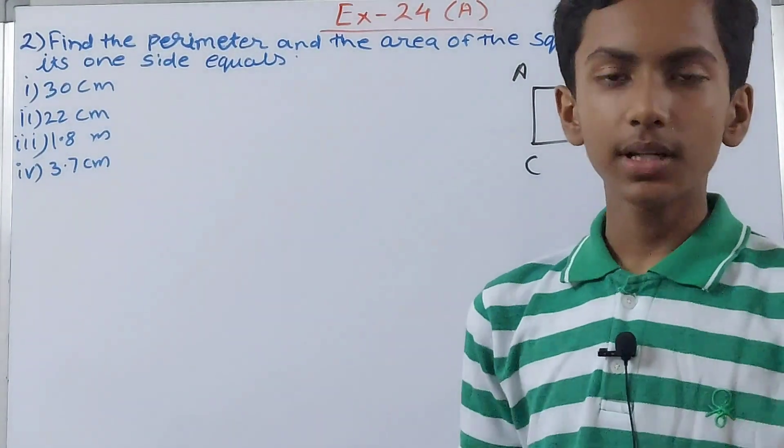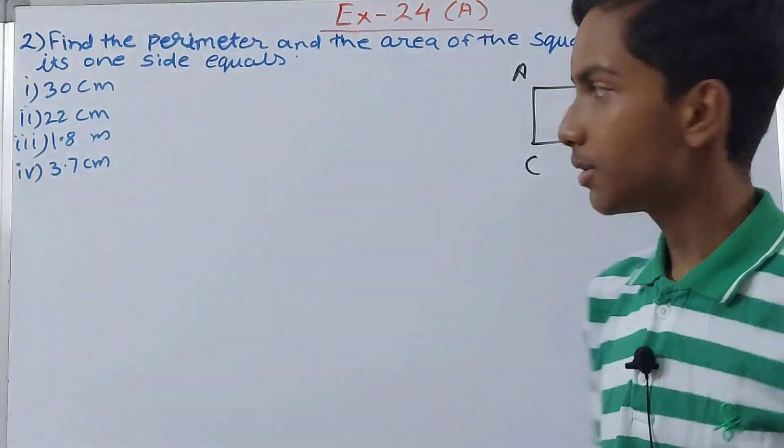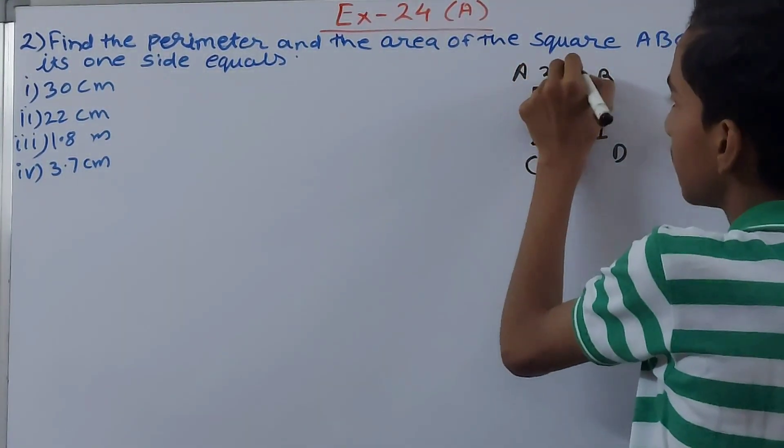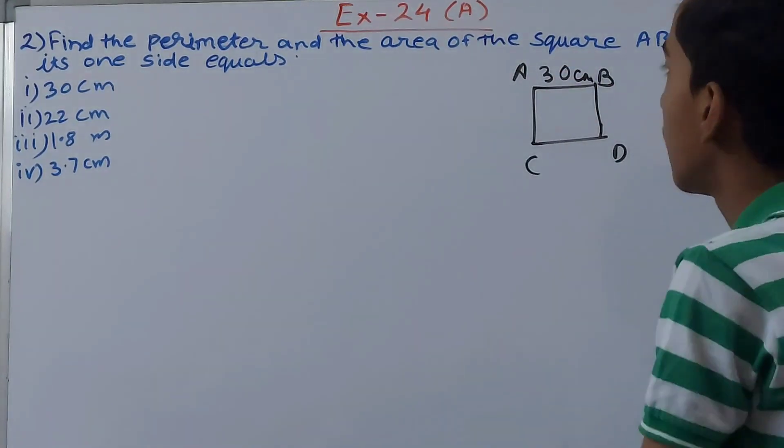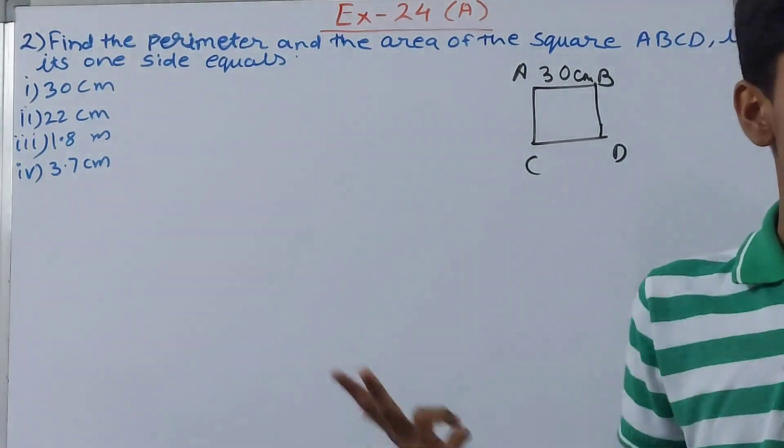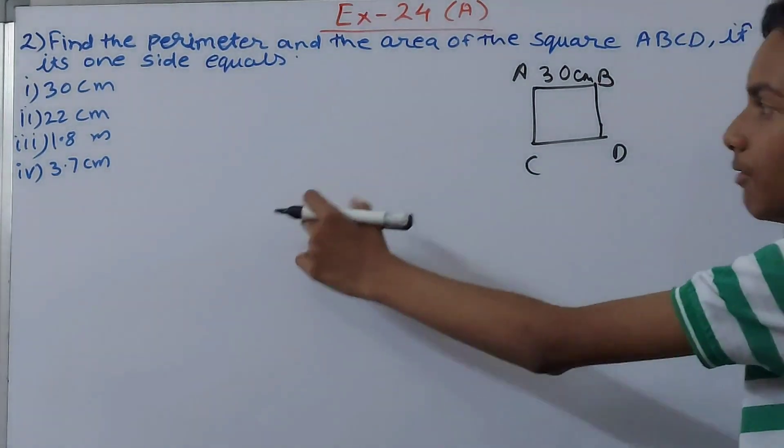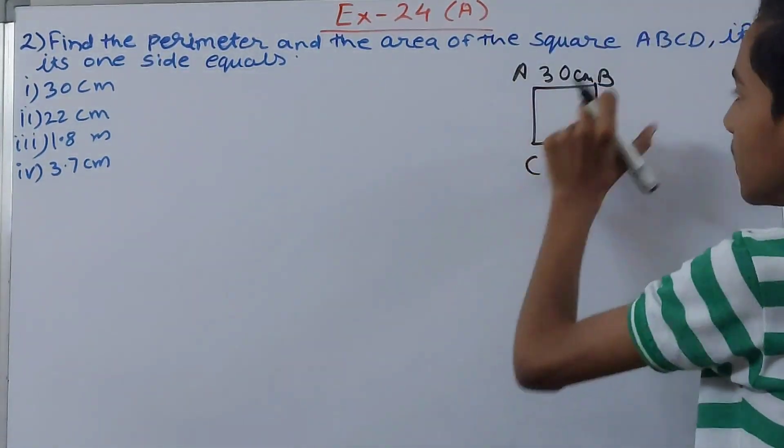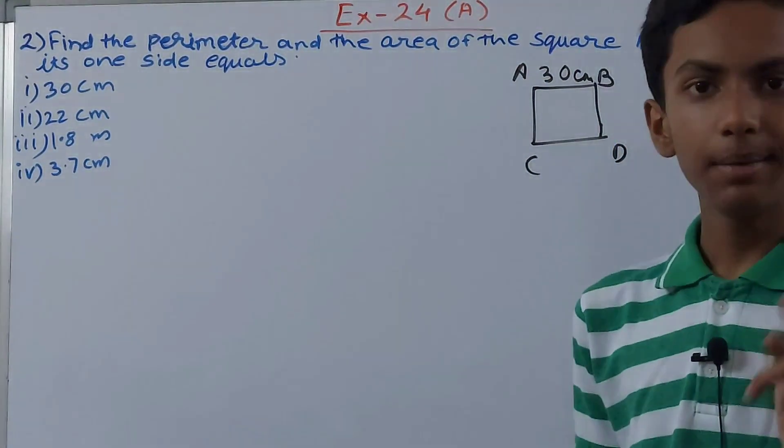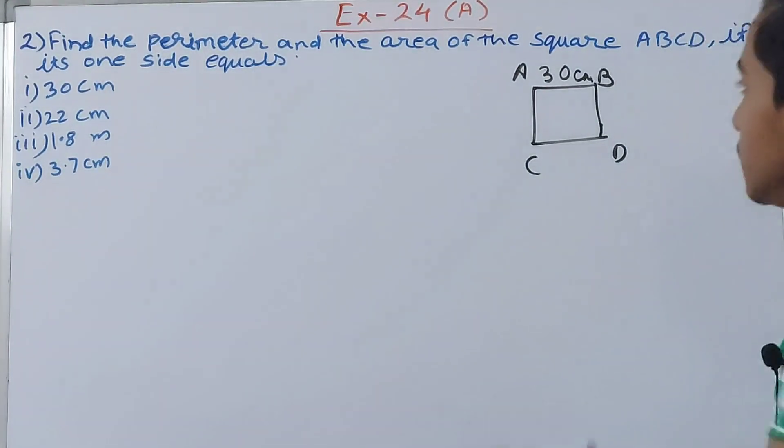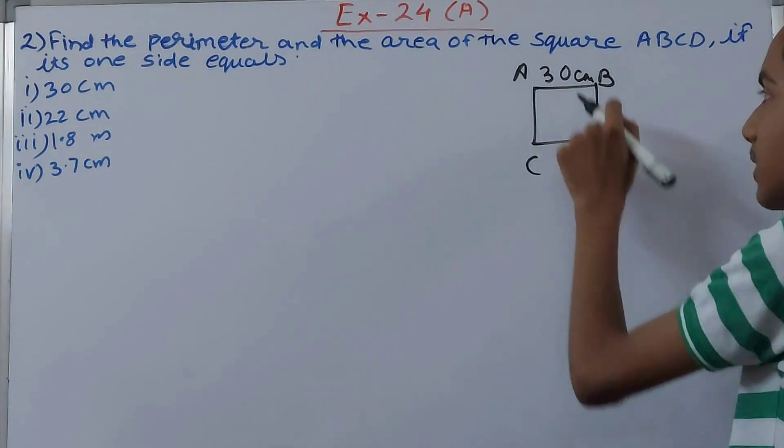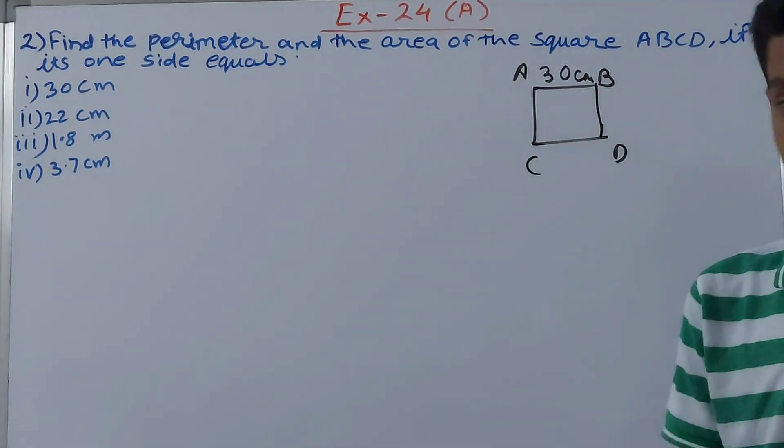The first one is 30 centimeter, so AB will be 30 centimeter. Using this we have to find the perimeter and area of this square. Don't think we are going to put all four sides together in one square. Only one side length will be taken at once. That means if this is 30 centimeter, this will also be 30 centimeter, this will also be 30 centimeter, this will also be 30 centimeter.